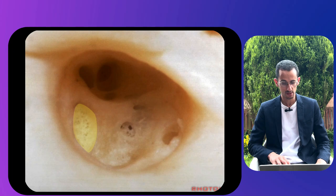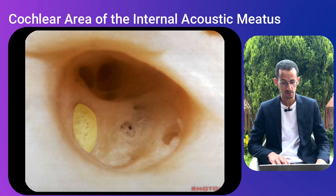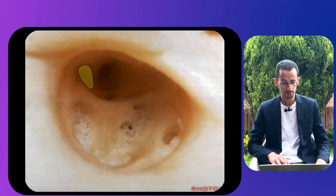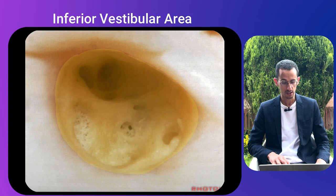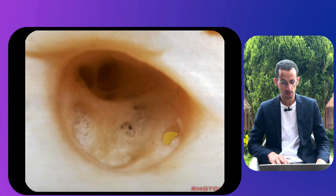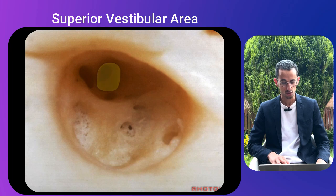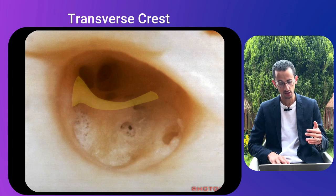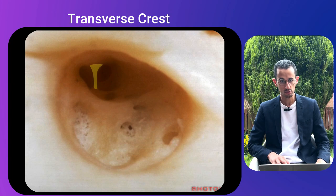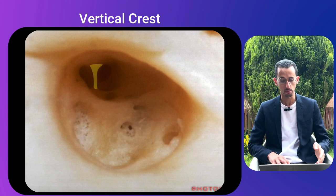Looking inside the internal auditory canal: the cochlear area of the internal acoustic meatus, the facial canal, the inferior vestibular area, the singular foramen, the superior vestibular area, the transverse crest dividing the superior from inferior part, and the vertical crest which subdivides the superior part.